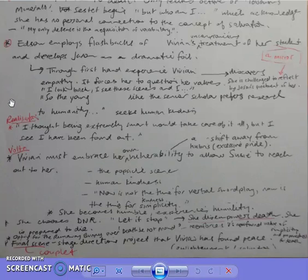We move to the volta stage of the play, if you like to call it that. It's not necessary to, but it's stated that Vivian must embrace her own vulnerability. She must shift away from her own hubris, because she's full of pride and arrogance at the beginning, and she must really expose her vulnerabilities to Susie and reach out to her, show her that she is scared and that she is open to support. The popsicle scene is a great moment, and I actually like to see the popsicle scene as the turning point, as the volta.